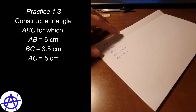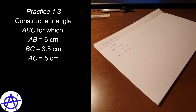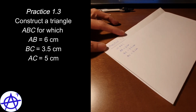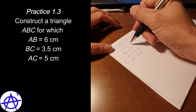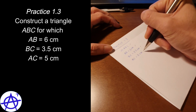Let's try Practice 1.3: construct a triangle ABC for which AB is 6 cm, BC is 3.5 cm, and AC is 5 cm. All the important information is given, so we need to draw a triangle and all the lengths are given.